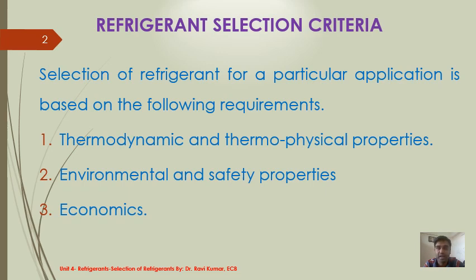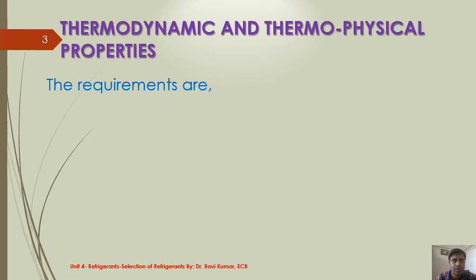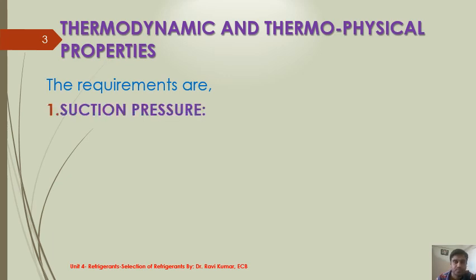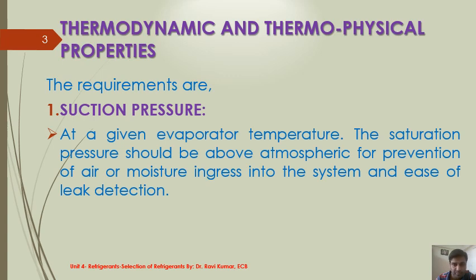We go to the first: thermodynamic and thermophysical properties. The first property requirement is suction pressure. At a given evaporator temperature, the saturation pressure should be above atmospheric for prevention of air or moisture ingress. This means the refrigerant selected should have a positive pressure, i.e., the evaporator pressure should be above atmospheric.